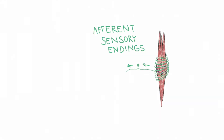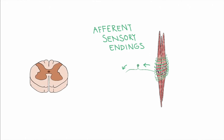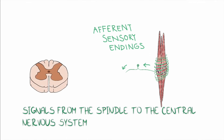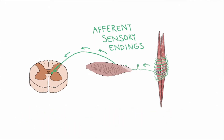How does the muscle spindle work? The central regions of intrafusal fibers are surrounded by efferent sensory endings. The term efferent means that they transport signals from the spindle to the central nervous system.